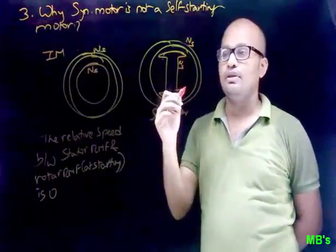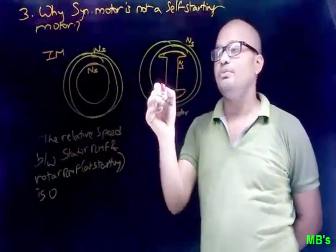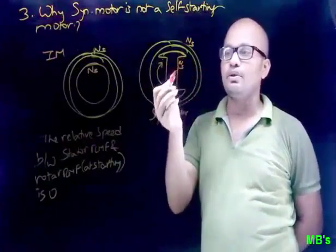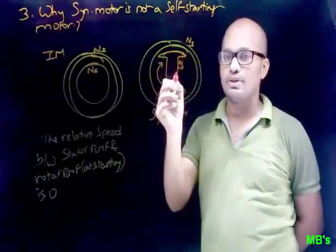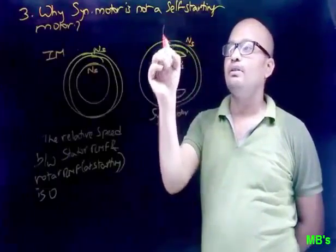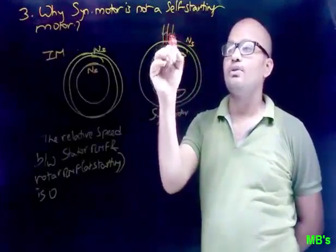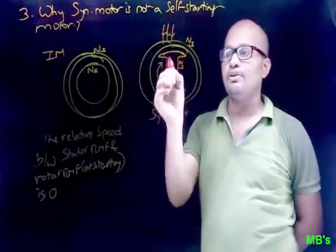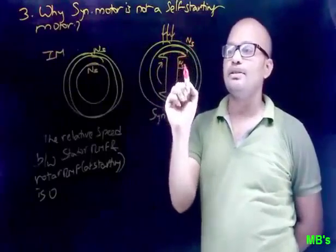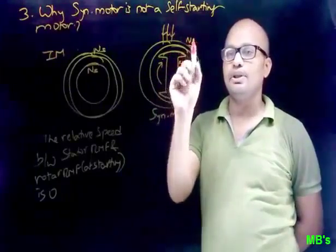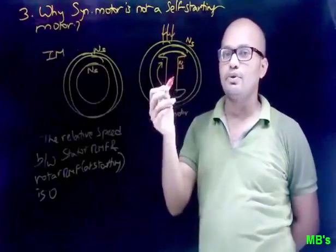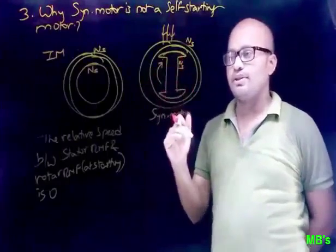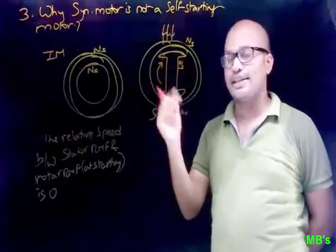To achieve this, by some external arrangement we need to make the rotor rotate at synchronous speed. If we can make the rotor rotate at synchronous speed, then the rotating magnetic field of the stator due to the input supply is NS, and because of the external arrangement the rotor speed is also NS. So the relative speed is zero. We can then say the synchronous motor has started. The different starting methods to start the synchronous motor will be discussed in the next topic.